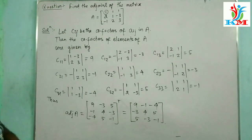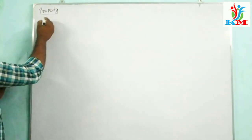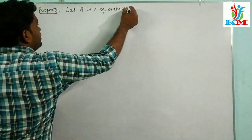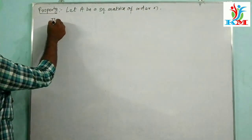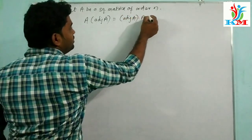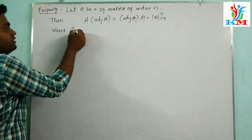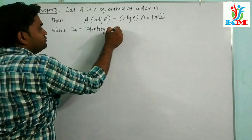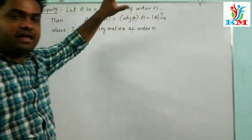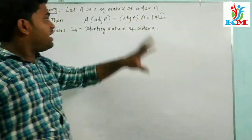Now let's discuss a property. Let A be a square matrix of order N. Then A times adjoint of A is equal to adjoint of A times A, which is equal to the determinant of A times the identity matrix I_N, where I_N is the identity matrix of order N.